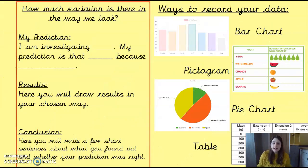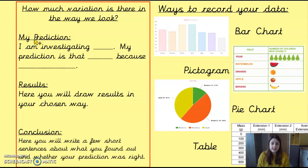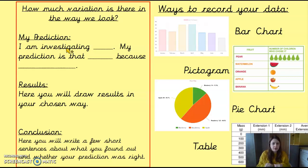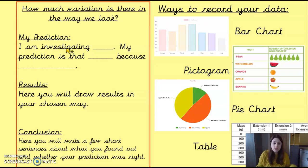So what you're going to do is simple. At the top of your page, put the heading of the question we're looking at. Then write your prediction using the sentence stems provided — for example: 'I am investigating the variation of eye colour in Year 6. My prediction is that blue eyes are going to be the most common, because all my friends have blue eyes.' Think about what you predict will happen with your chosen question, and why.